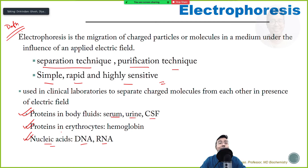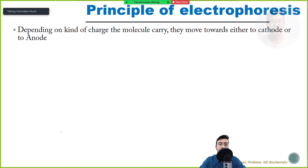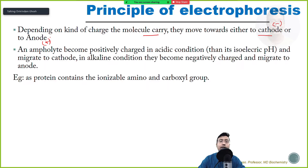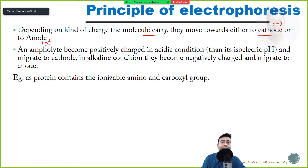Now we move on to what is the principle based on which electrophoresis works. The principle is very simple: unlike charges attract each other and like charges repel each other. A positive charge will move towards the negative charge and a negative charge has a tendency to move towards the positive charge. So depending on what kind of charge a molecule carries, they move either towards the cathode - the negatively charged electrode - or the anode. Now know this: the majority of components we will be discussing is an ampholyte. What is an ampholyte? An ampholyte is a molecule that can alter its surface charge based on what pH you put it into.